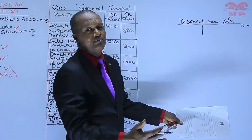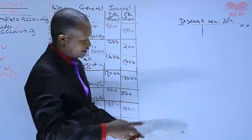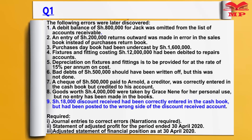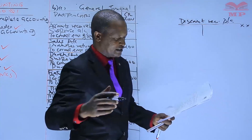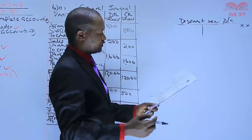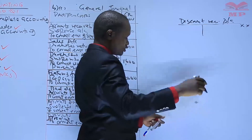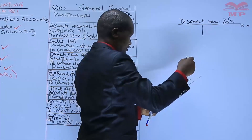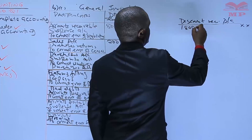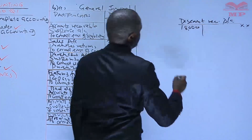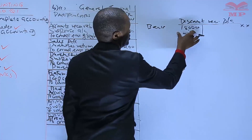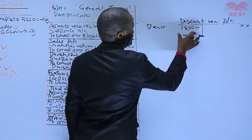The bank account is debited. But here we read that it had been correctly entered in the cash book, so the cash book is accurately recorded. However, it had been posted to the wrong side of the discount received account. The right side is the credit side, but this entry was made on the debit side — 18 million — which was wrongly recorded.